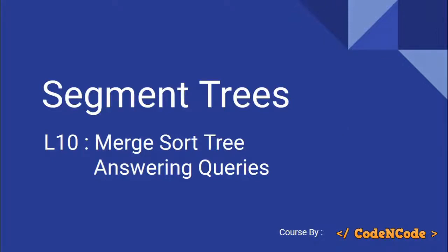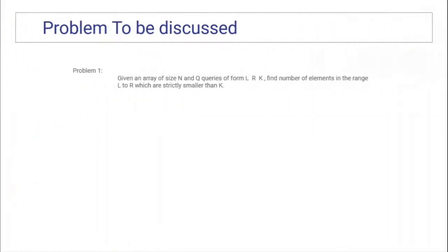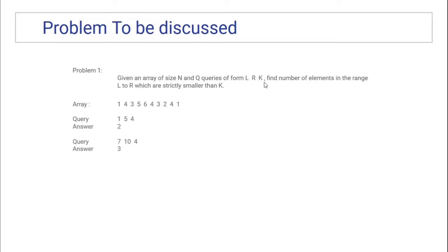Hello guys, this is Code In Code and this is the 10th lecture of this segment tree series. Until now we have been studying the Merge Sort tree. The problem that we have been discussing is: given an array of size n and q queries of the form l, r, and k, we have to print the total number of integers in the range l to r which are strictly smaller than k.